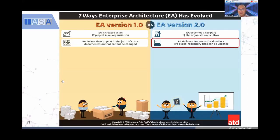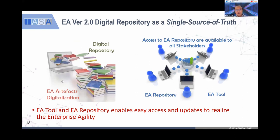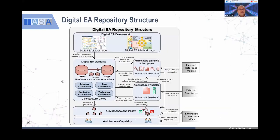In EA 2.0, EA is preserved and maintained in a live digital repository that can be updated easily. They have a digital repository targeting different key stakeholders and different users — how they can access information from the architecture to support decision-making, impact analysis, and dependency analysis. The structure of the digital EA repository has the framework, the four domains — business, data, application, technology — the library, principles, capabilities, governance, policies, and it can also connect to external sources. For instance, if you want to know the lifecycle of a particular hardware or software, you can do that to maintain up-to-date information instead of going into end-of-life or end-of-support for a product.